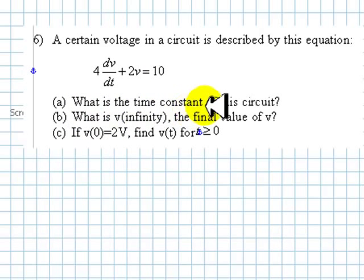First, what is the time constant of this circuit? Well, we know that in an equation like this, the response is going to be an exponential. V(t) is going to be an exponential writing on top of its final value constant.